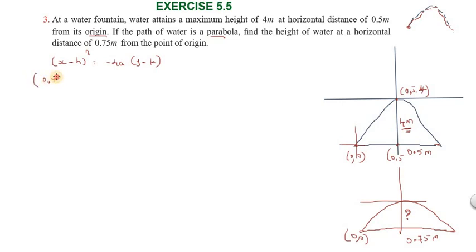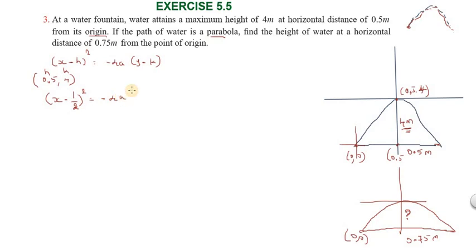We substitute the vertex h = 0.5, k = 4 into the standard form. The equation becomes: (x minus 1/2) whole square equals minus 4a into (y minus 4).